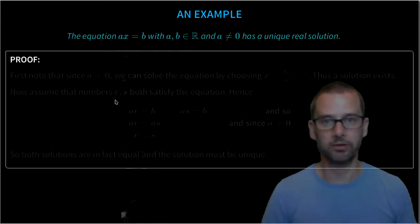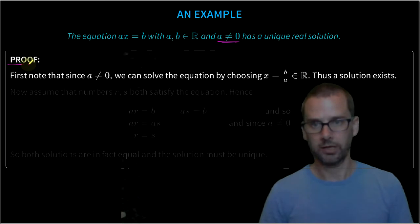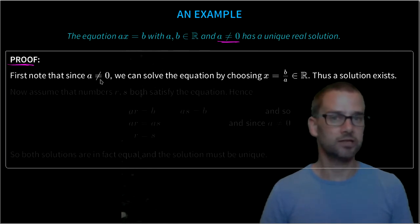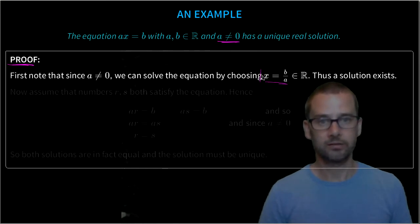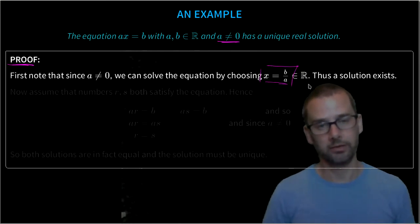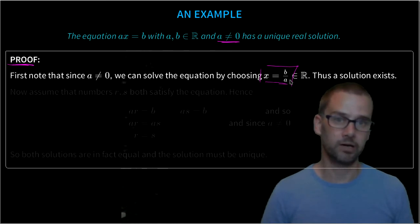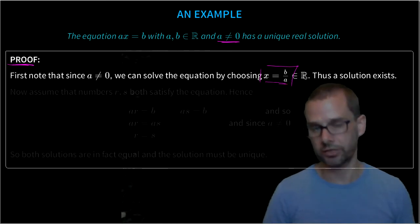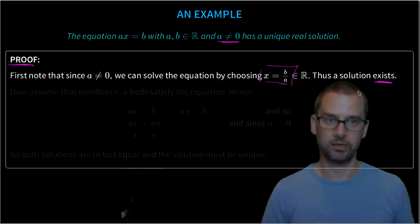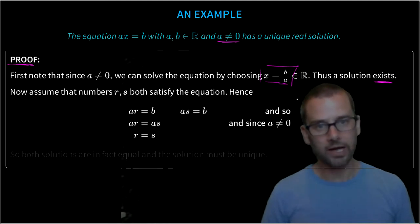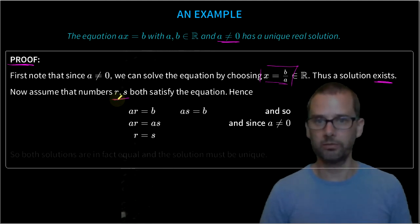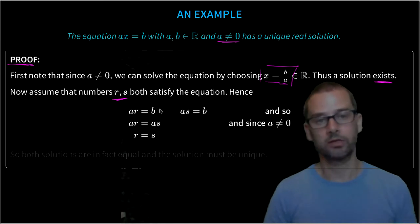Here's an example of this. The equation ax = b with a, b ∈ ℝ and a ≠ 0 has a unique real solution. First note in our proof that since a ≠ 0, we can solve the equation by choosing x = b/a. And we know that's a real number because b is a real number, a is a non-zero real number, so their ratio is a real number. Thus we know a solution exists. Now, as the second part of our proof, assume that the numbers r and s both satisfy the equation.